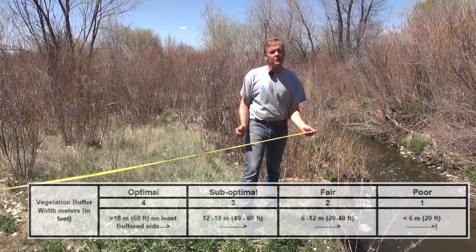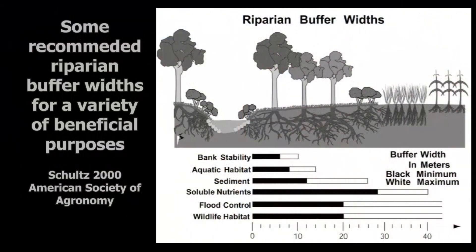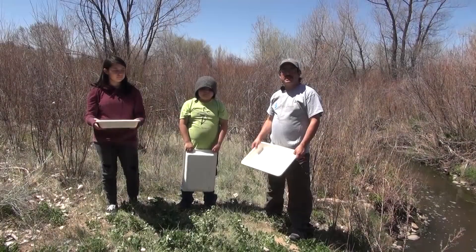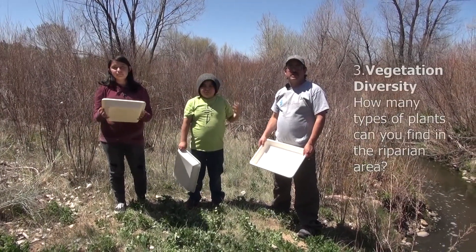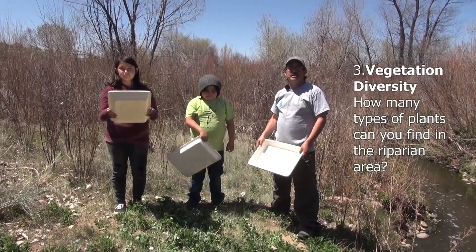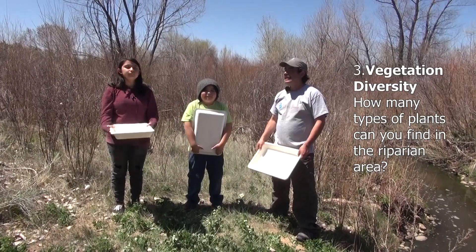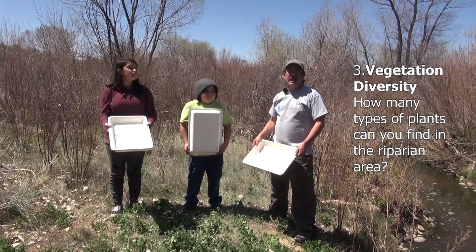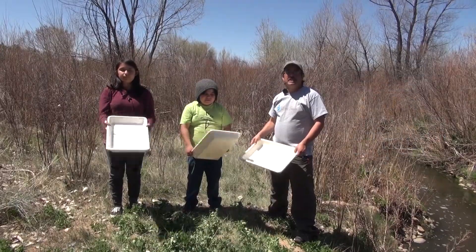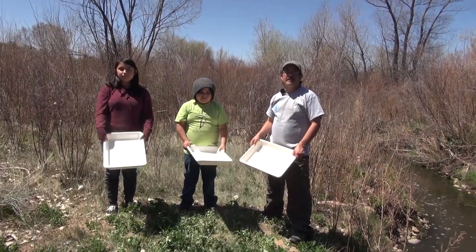If the road were a little further away from the stream, that would be better. Here is a variety of recommended riparian buffer widths — remember, the wider the area, the better. The next measurement is trying to get an understanding of how many different types of plants exist within the riparian area, which we call vegetation diversity.